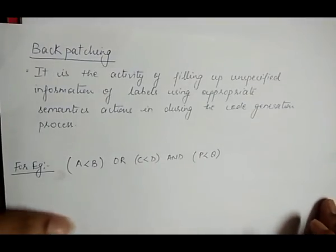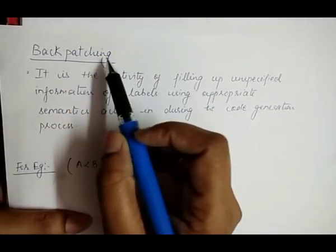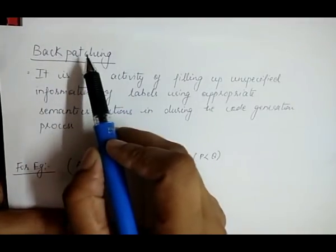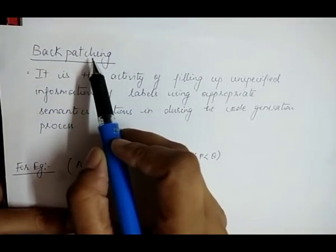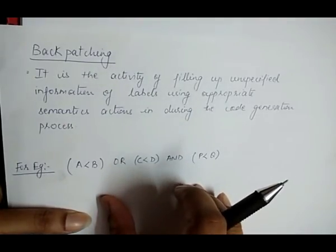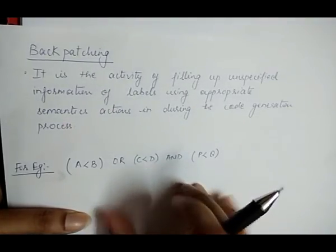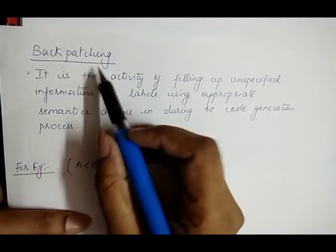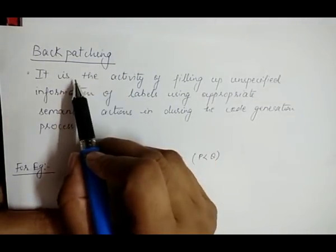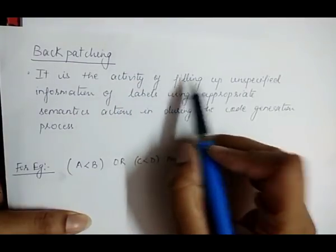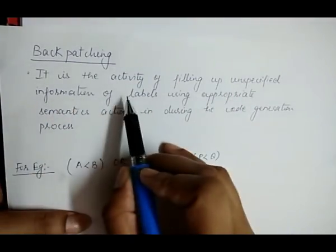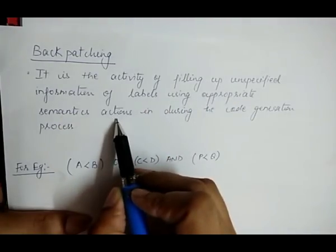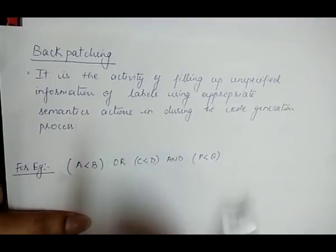We will discuss the next topic: backpatching. First we discuss what backpatching is and why we use it, and after that with the help of an example we will see how backpatching is applied to a three-address code. Backpatching is defined as the activity of filling up any unspecified information of labels with appropriate semantic actions during the code generation process.